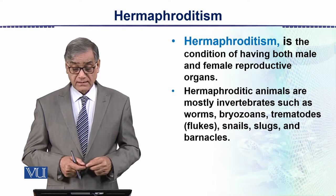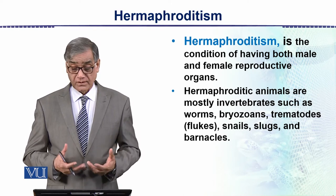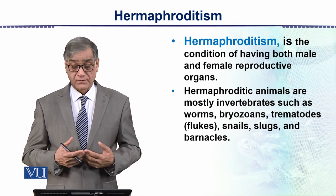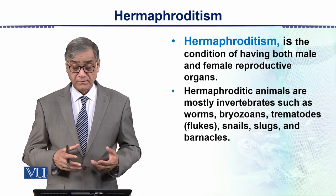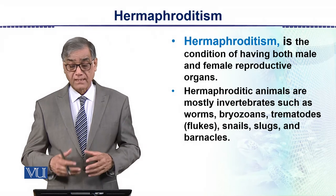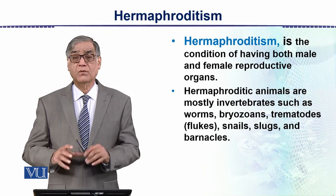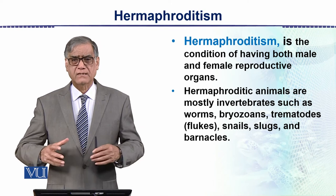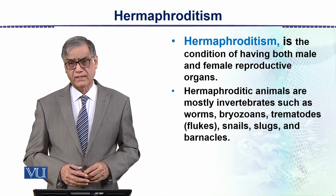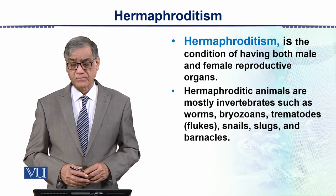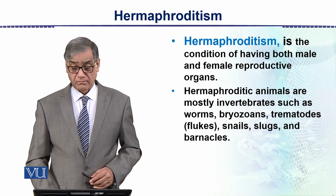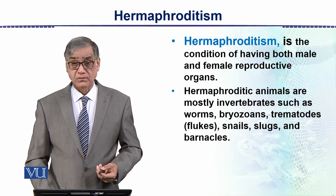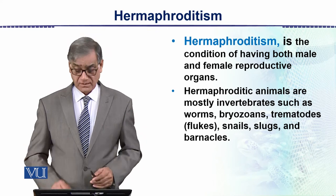Hermaphroditic animals are mostly invertebrates such as worms, bryozoans, trematodes (which are flukes), snails, slugs, and barnacles. These are all invertebrates. Mostly they are aquatic, or they live in very moist conditions.